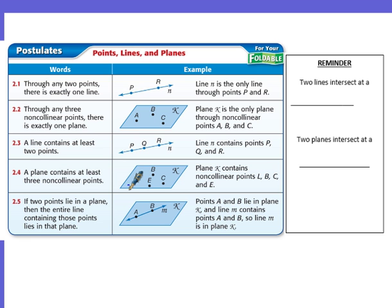A plane contains at least three non-collinear points. So there can always be more points in a plane. And if two points lie in a plane, then the entire line containing those points exists in the plane. So that's kind of a combination of these two. Basically, if two points are in a plane, I can draw a line between those two points. And if the points are in the plane, then the line has to be in the plane.